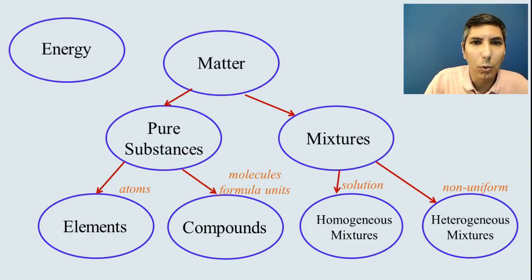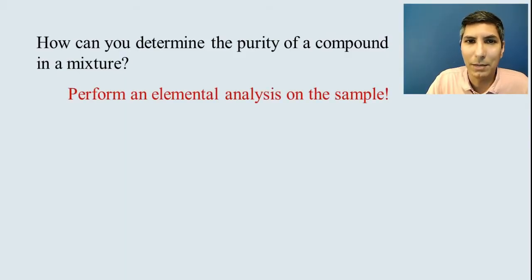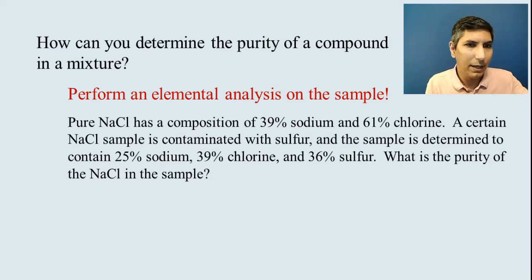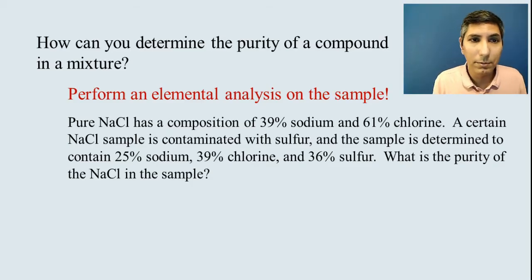How can we determine the purity of a compound in a mixture? Well, we can do an elemental analysis on the sample. Let's say that we have a sample and we think it's mostly sodium chloride. We know that pure sodium chloride has 39% sodium and about 61% chlorine. But we know that there's a sample that we have that's been contaminated with sulfur. So we will run an elemental analysis on this and find that the sample has 25% sodium, 39% chlorine, and 36% sulfur. What's the purity of the sodium chloride in the sample?